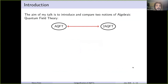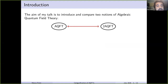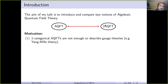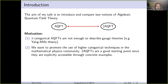As a disclaimer before I start, everything I'm going to say is going to be pretty introductory — actually super introductory — so please don't be put off by this first slide. The aim of my talk is to introduce and compare two notions of algebraic quantum field theory: a one-categorical version and a two-categorical version. The reason is that one-categorical AQFTs are not enough to describe gauge theories, and we would also like to promote the use of higher categorical techniques in the mathematical physics community. Two-AQFTs are a good starting point, since one can obtain concrete examples.